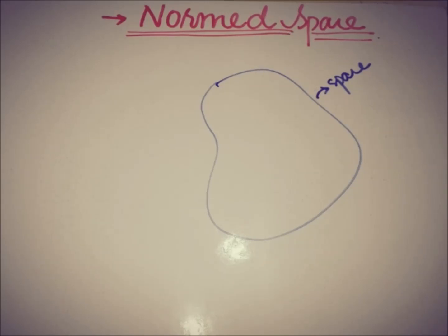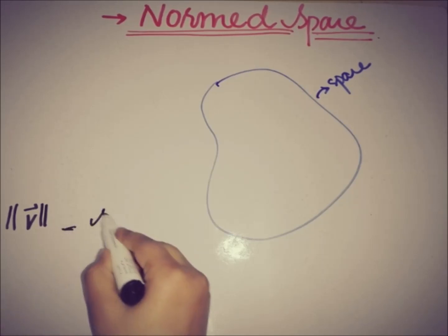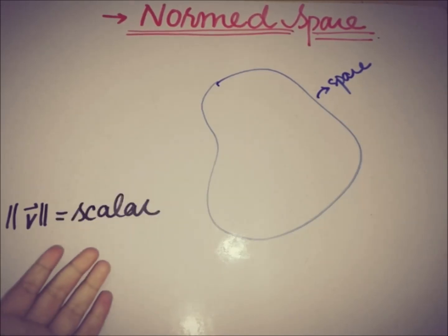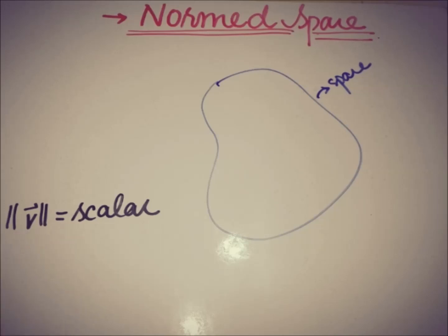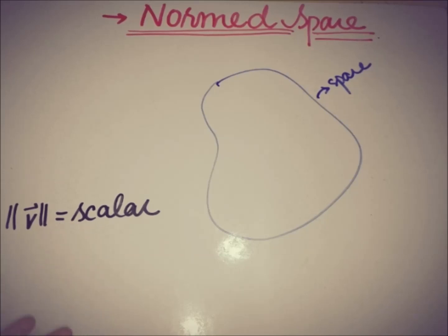Before going to those axioms, let's consider the meaning of norm. We know that if we have a vector v and we find the norm of this vector — represented by double bars — the answer will be a scalar. This scalar is the length of the vector. So the norm is the length of a vector, and the length is a scalar quantity. We can say that norm is a function that takes a vector as input and gives a scalar as output.